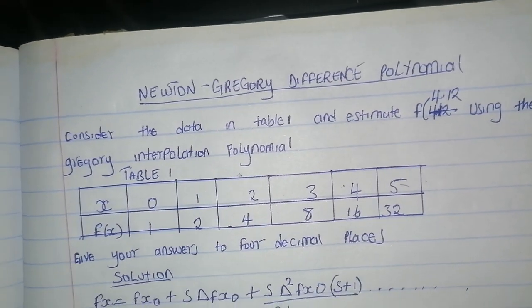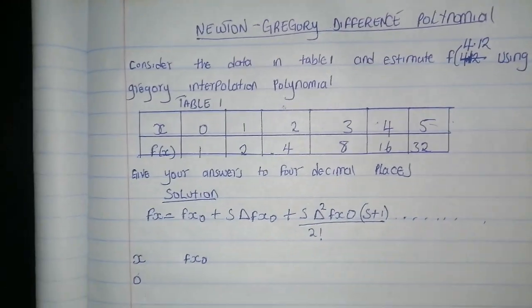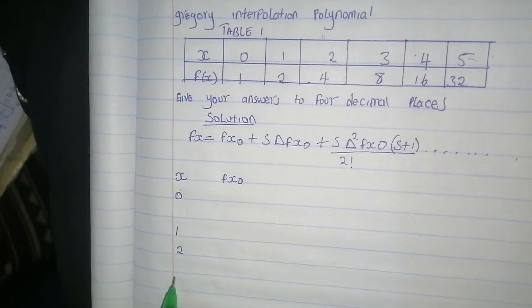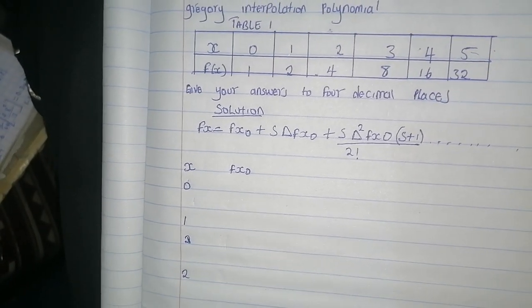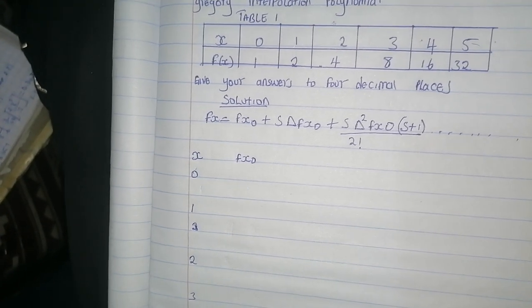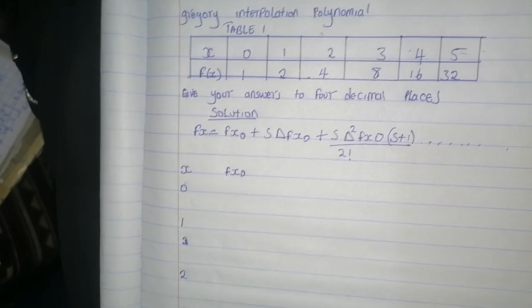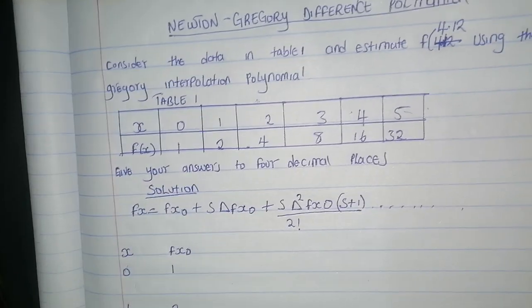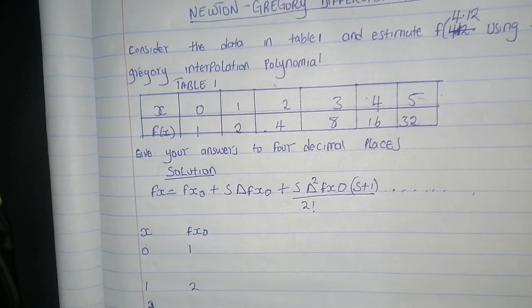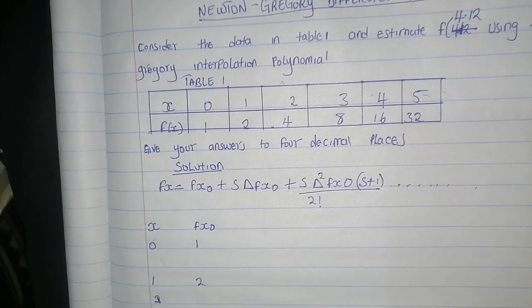x values: 0, 1, 2, 3, 4, 5. f(x) values: 1, 2, 4, 8, 16, and 32.